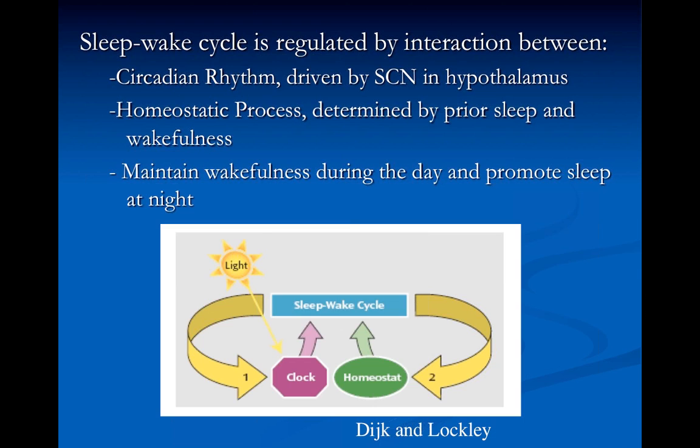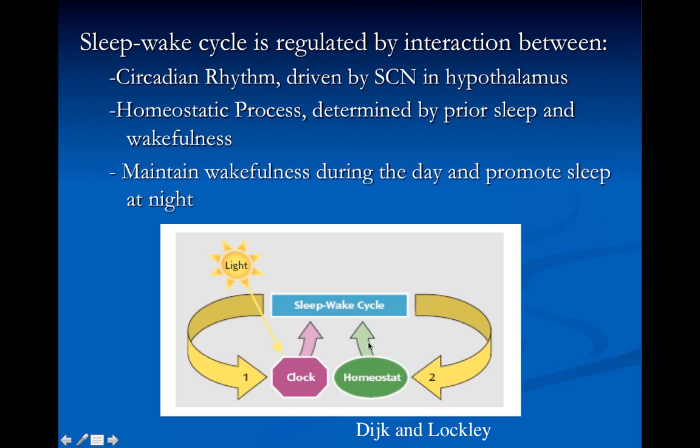What controls our sleep-wake cycle? There's a lot of evidence that the sleep-wake cycle is disrupted in mood disorders. This cycle is regulated by a structure called the suprachiasmatic nucleus in the hypothalamus of the brain. It's a homeostatic process — a feedback loop determined by our amount of prior sleep and wakefulness — that maintains wakefulness during the day and promotes sleep at night.